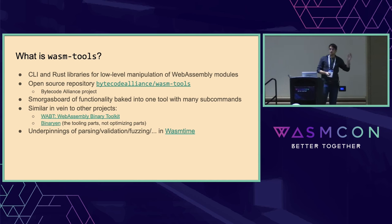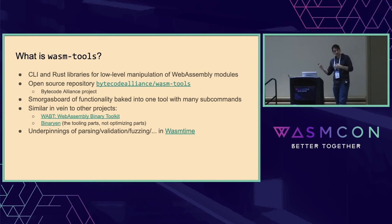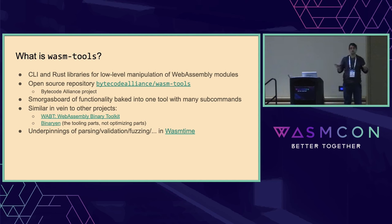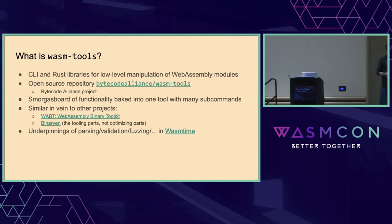WASM tools is a CLI and a suite of low-level libraries for manipulation of WASM modules. This is an open-source repository in the ByteCode Alliance. We accept many contributions from anyone interested in adding various subcommands. The idea is that there is a lot of functionality baked into a single command called WASM tools, with lots of subcommands internally to explore a WASM module. This is very similar to other projects such as Wabbit, the WASM Binary Toolkit, or Binarian — specifically the tooling and converting between text and binary formats.